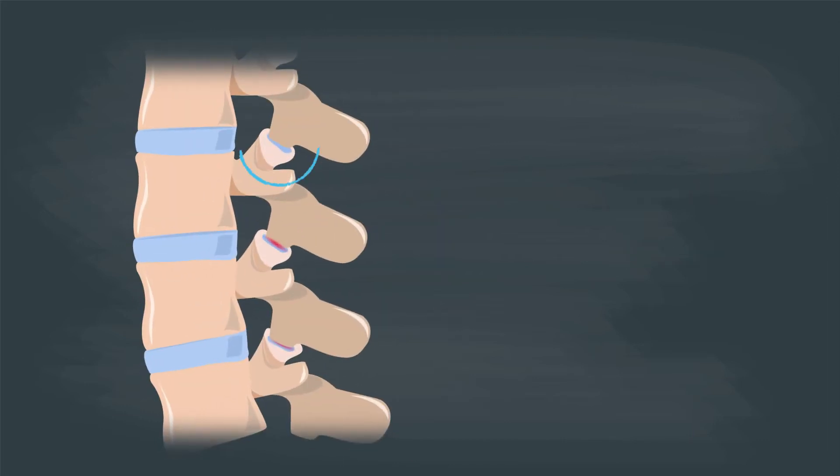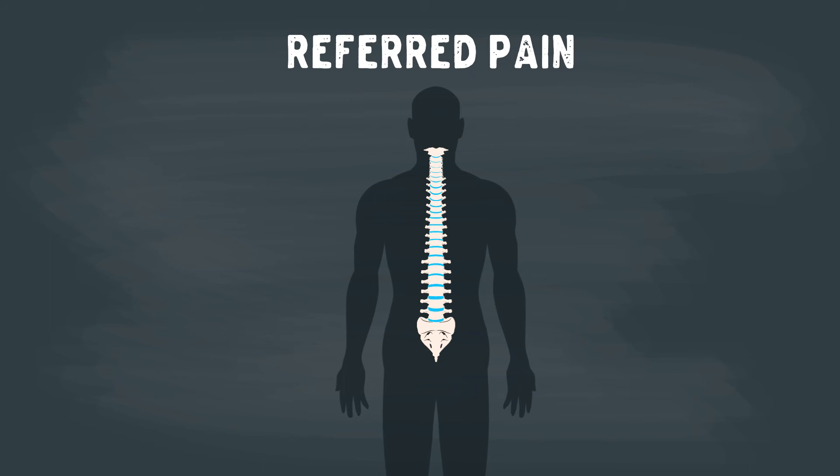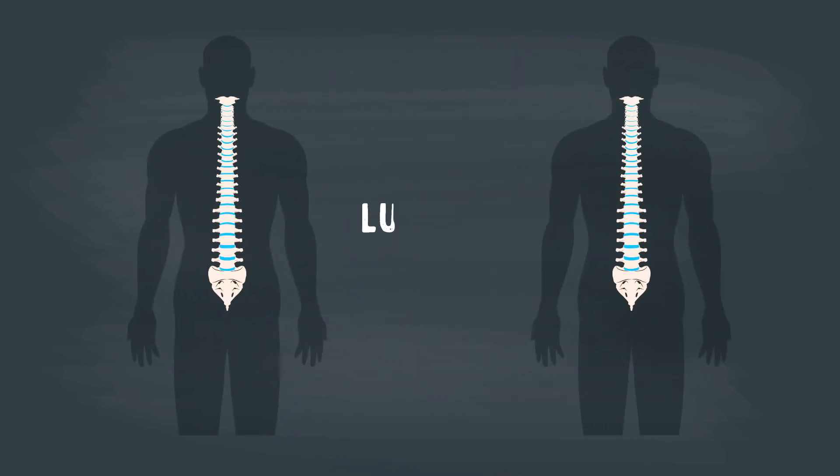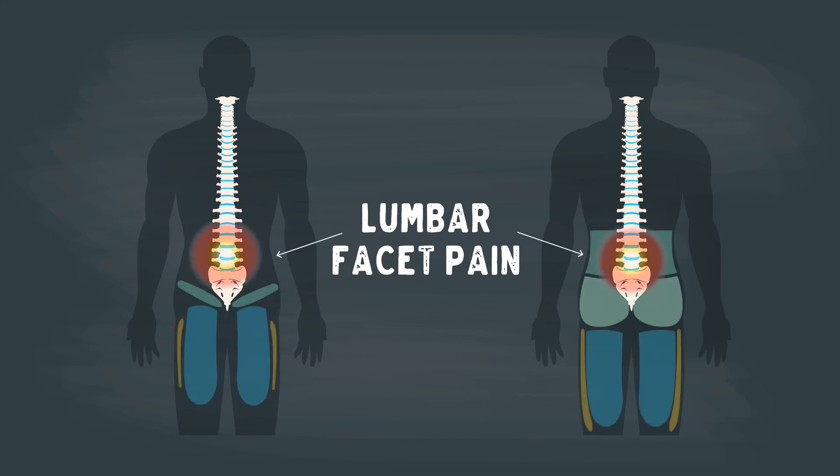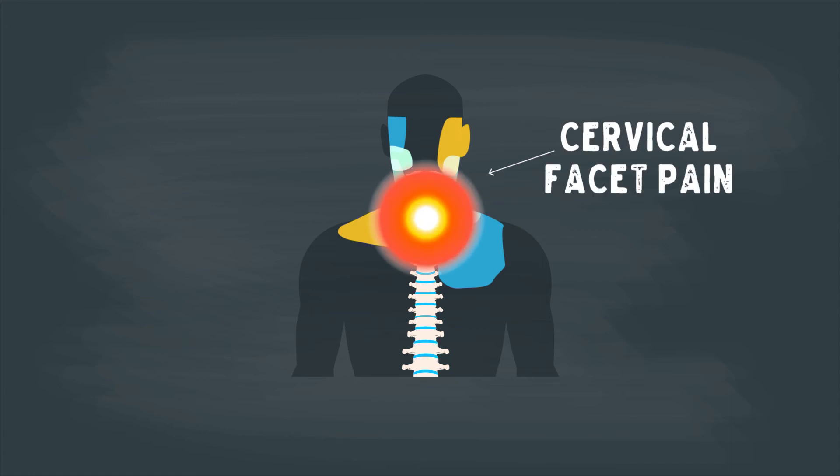When broken down, they can not only cause neck or back pain, but also what's called referred pain. Local nerves can send pain signals to areas distant from the spine itself. For example, lumbar facet pain can cause pain in the hips or even behind the thighs. Cervical facet pain can cause headaches and shoulder blade pain.